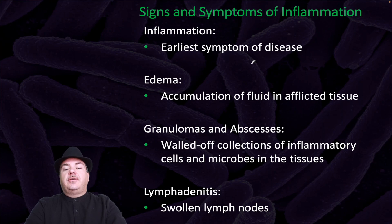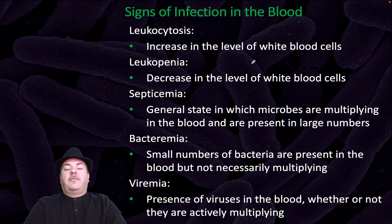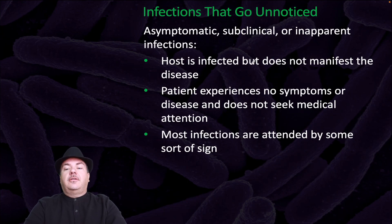Inflammation is the earliest symptom of disease. Edema is the accumulation of fluid in affected tissues. Granulomas and abscesses are walled-off collections of inflammatory cells and microbes in the tissues. Lymphadenitis is swollen lymph nodes. Signs of infection in the blood include leukocytosis — an increase in white blood cell levels — and leukopenia, a decrease. Septicemia is a general state in which microbes are multiplying in the blood in large numbers. Bacteremia is when small numbers of bacteria are present in the blood but not necessarily multiplying. Viremia is the presence of viruses in the blood, whether or not actively multiplying. There are also asymptomatic, subclinical, or inapparent infections where the host is infected but does not manifest disease and does not seek medical attention.